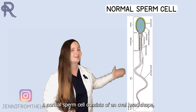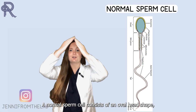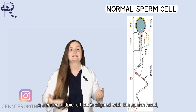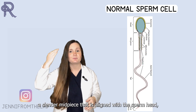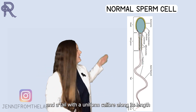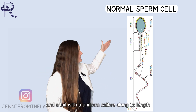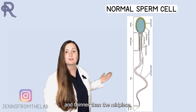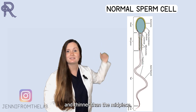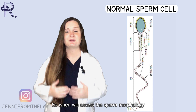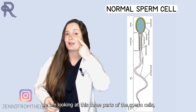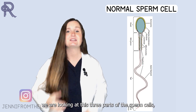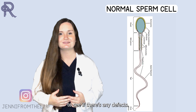A normal sperm cell consists of an oval head shape, a slender midpiece that is aligned with the sperm head, and a tail that has a uniform caliber along its length and is also thinner than the midpiece. When we assess the sperm morphology, we are looking at these three parts of the sperm cell to see if there are any defects.